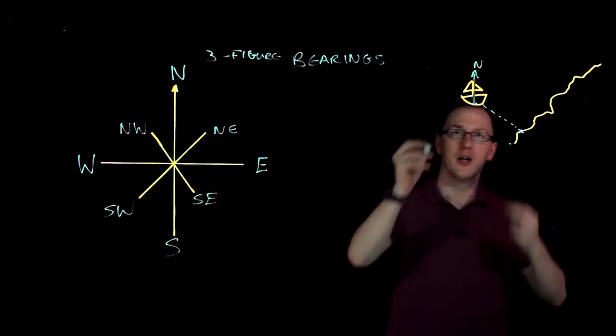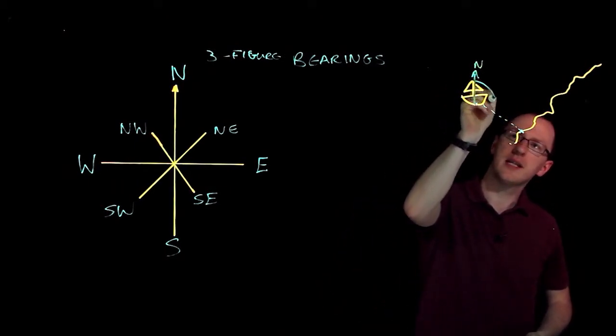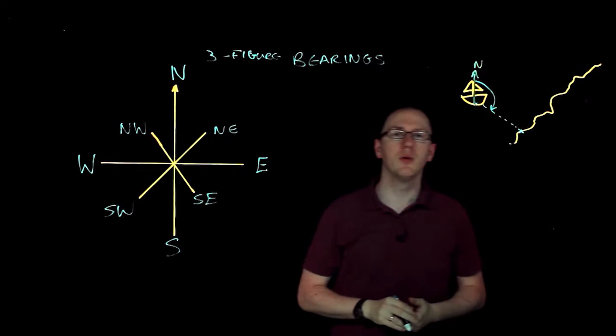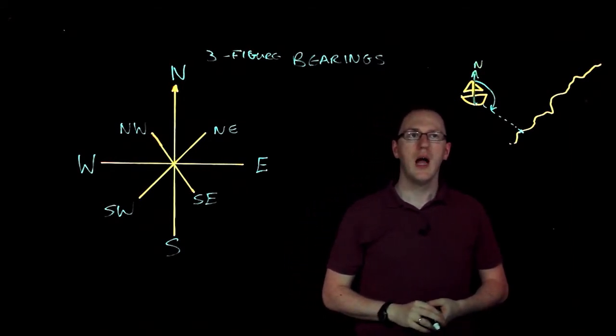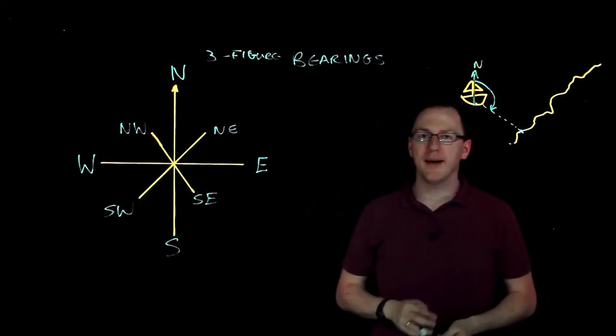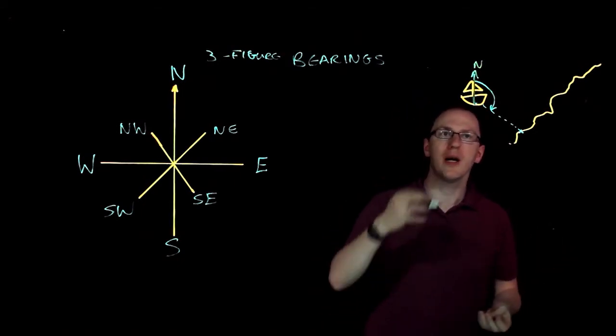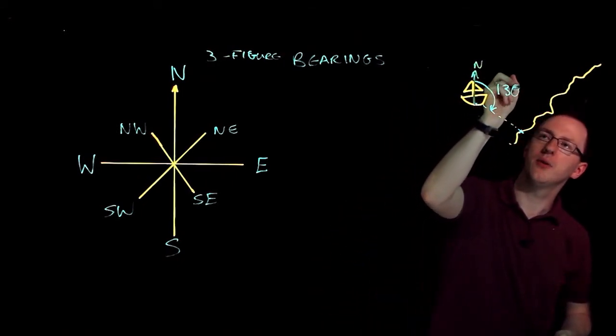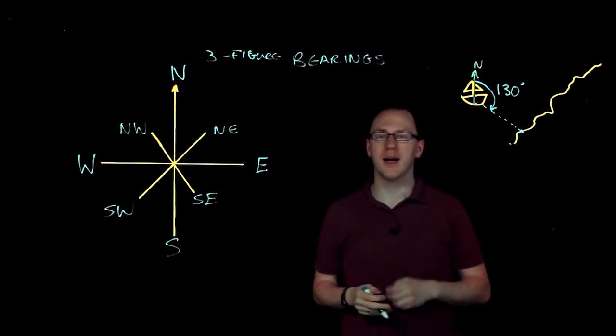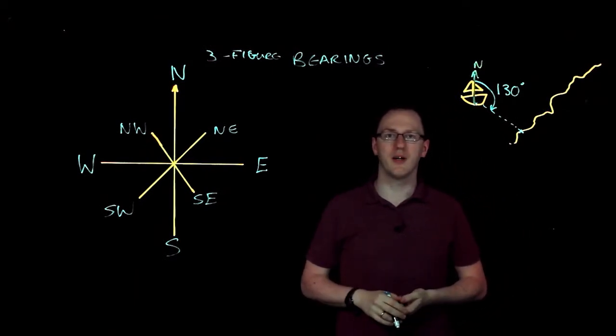We're going to turn like the clock. So we're going to measure this angle. That's the angle we're going to turn in. And we'll measure that angle, and that's the bearing we'd quote. So we'd quote, I don't know, maybe 130 degrees would be the bearing I might quote there, get my protractor out and measure it.